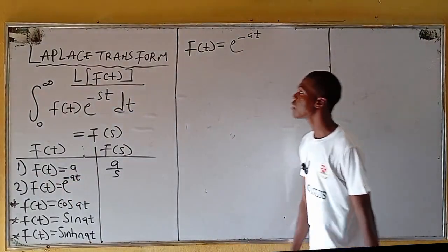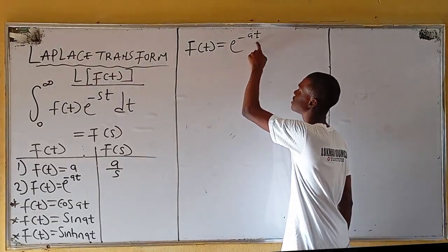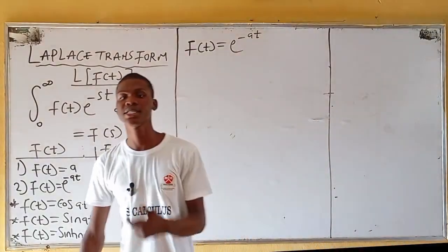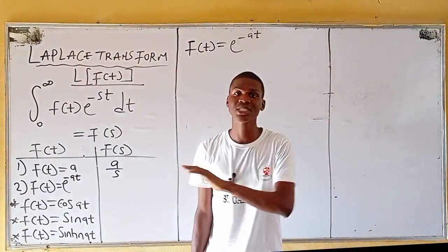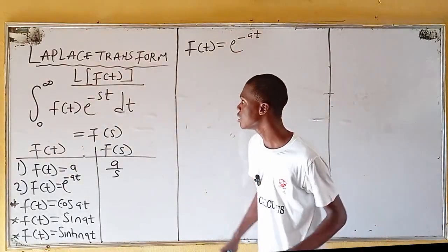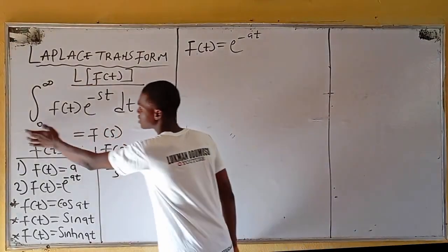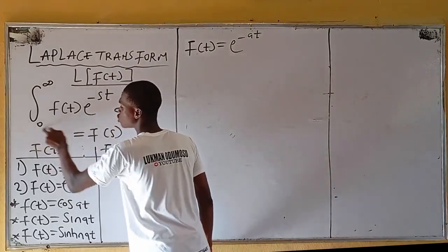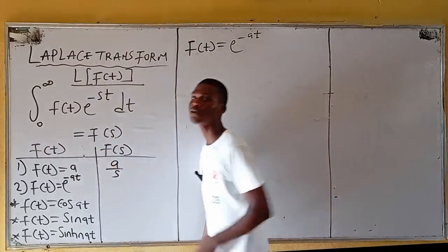Next up, I'm having f(t) equals exponential negative at — f(t) = e^(-at). Having in mind that the same steps apply, nothing is changing. We've defined it: generally, when you want to transform a function f(t), this is the integral formula. When you are done with this integration you obtain F(s).